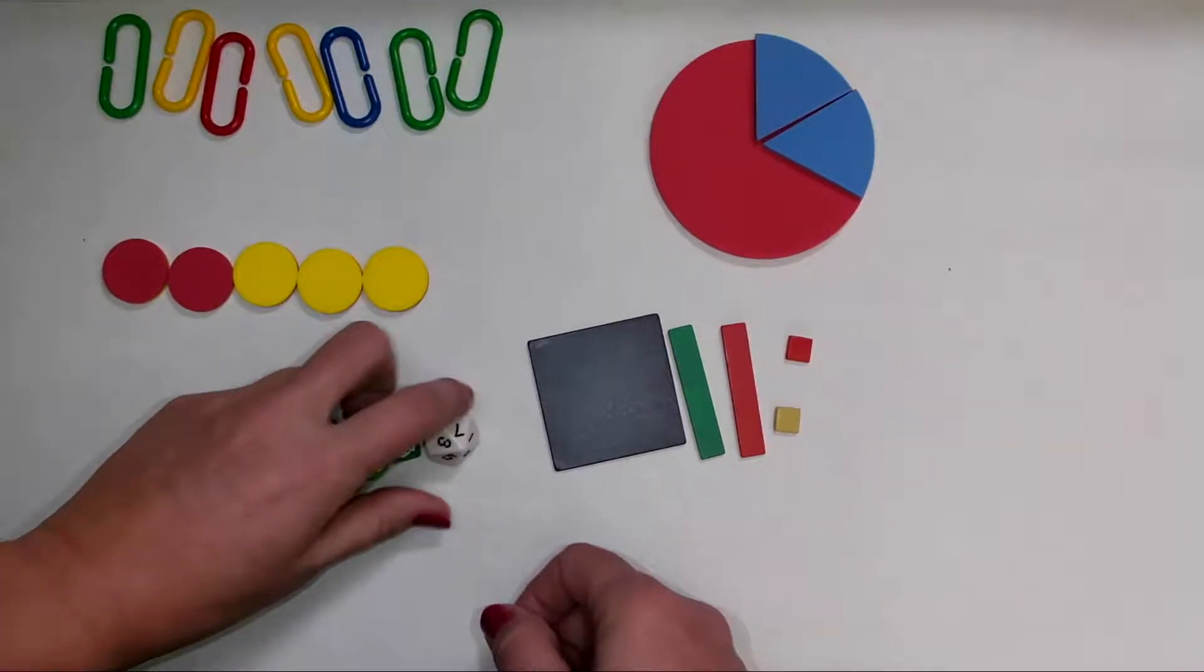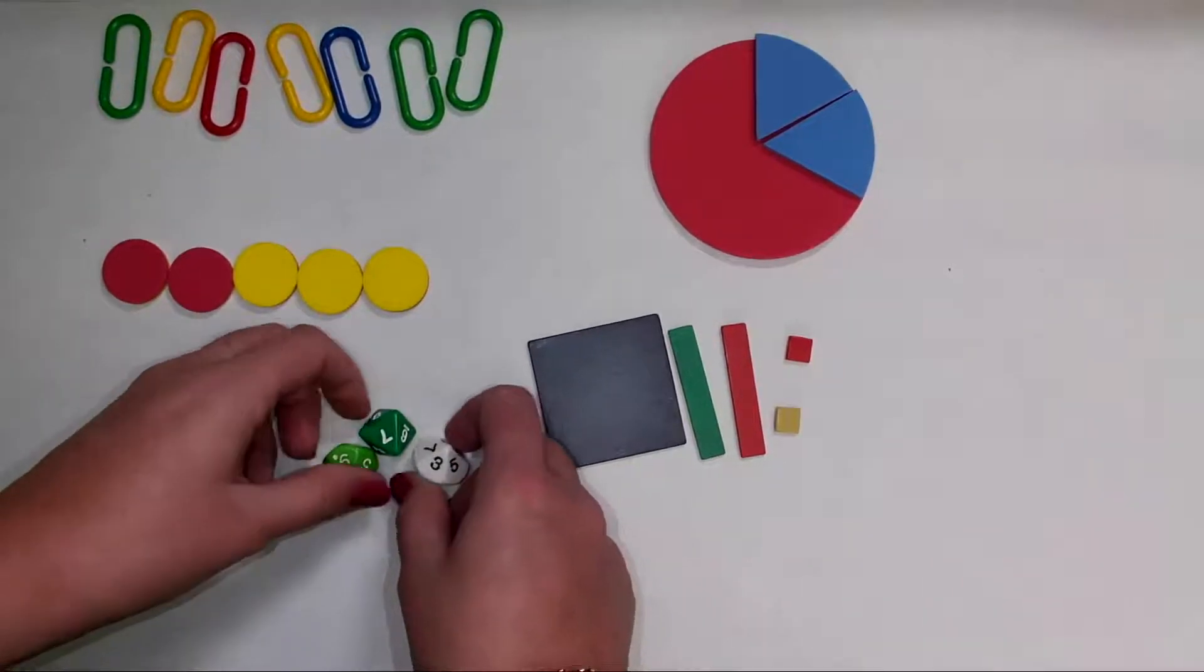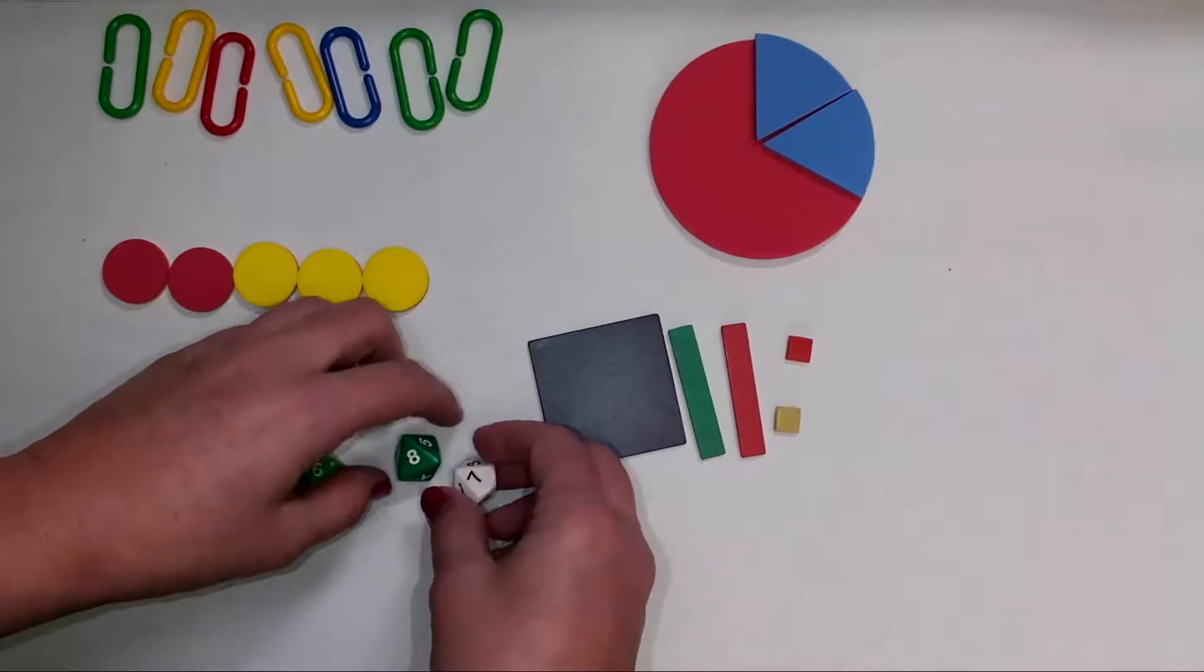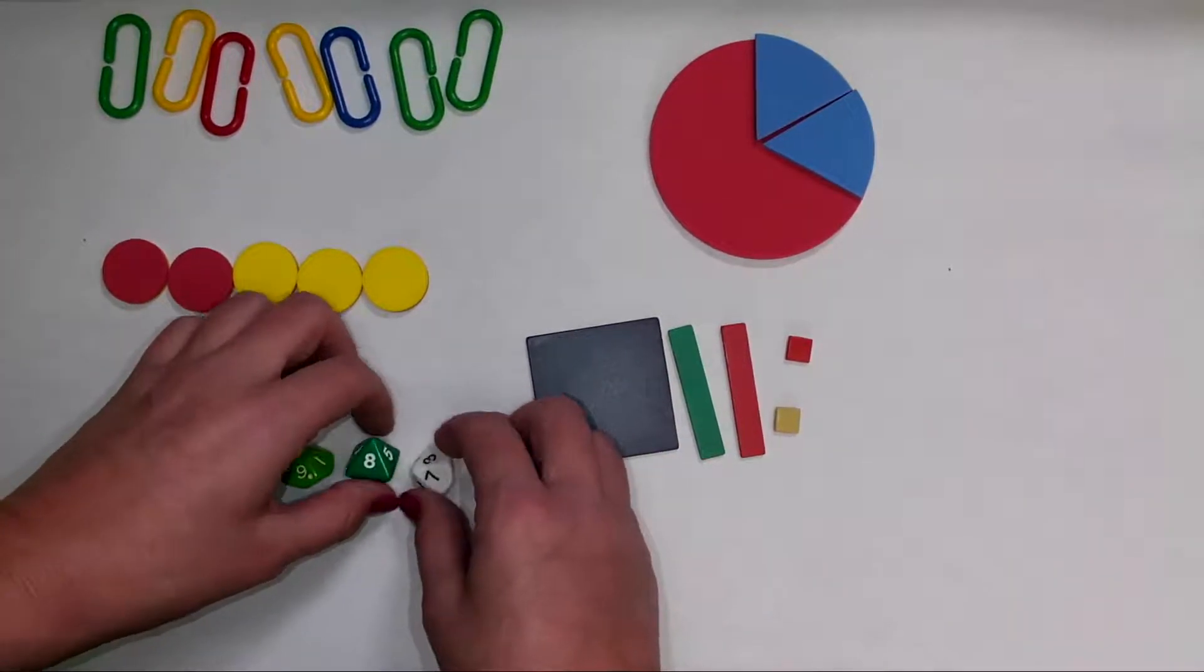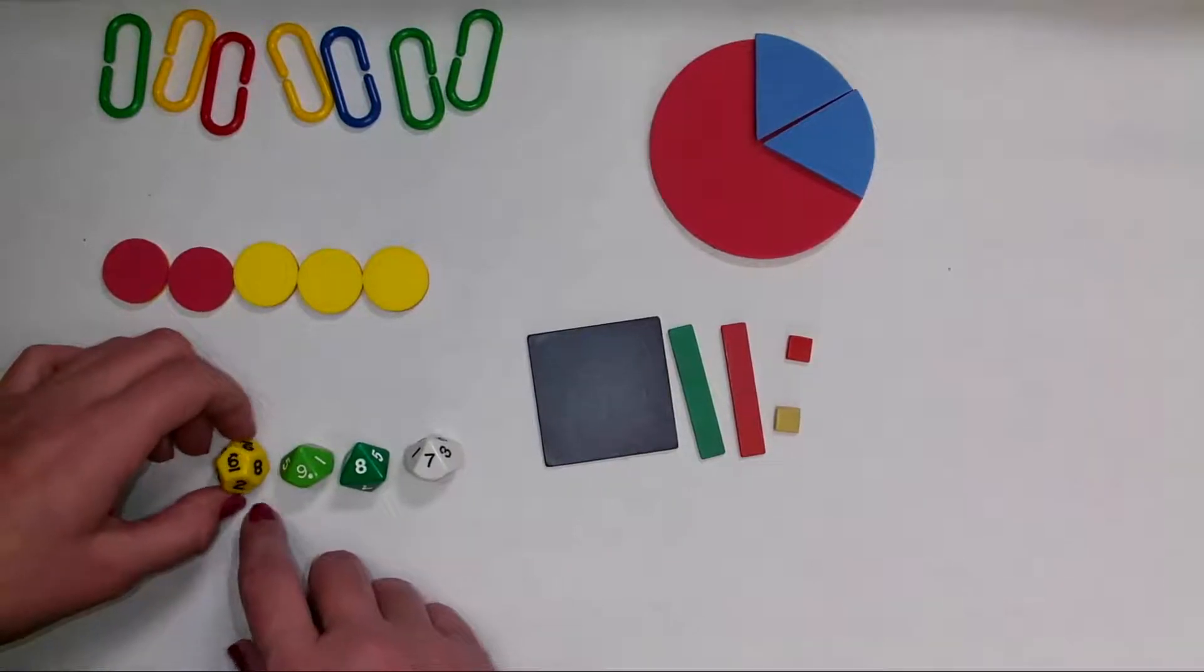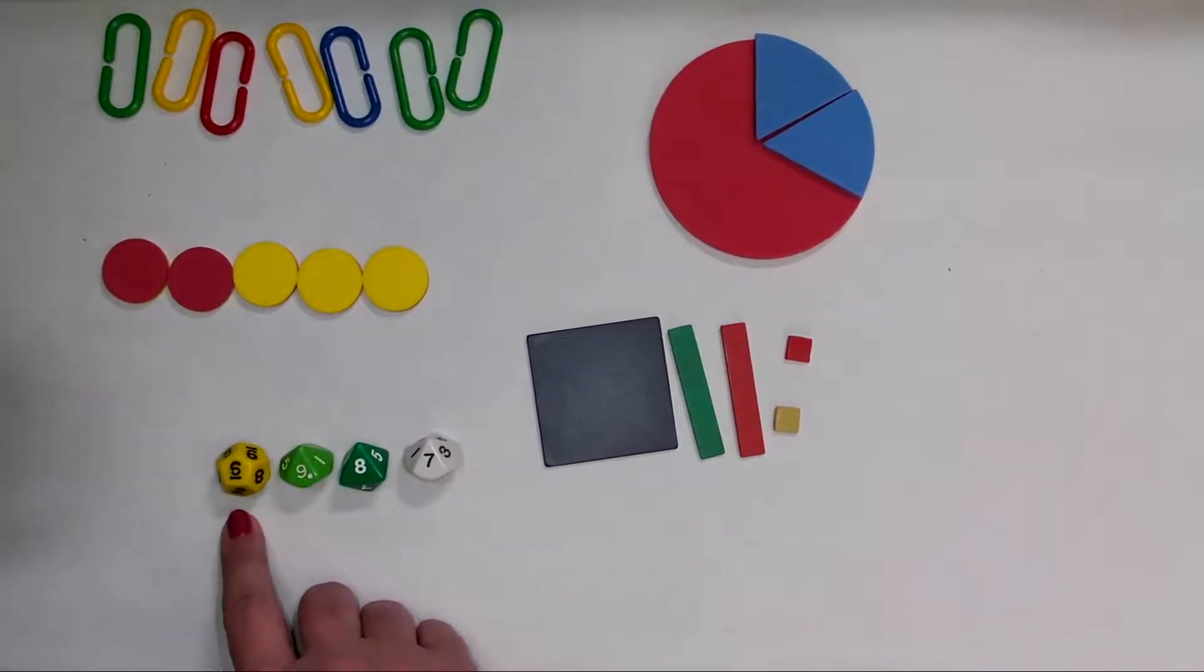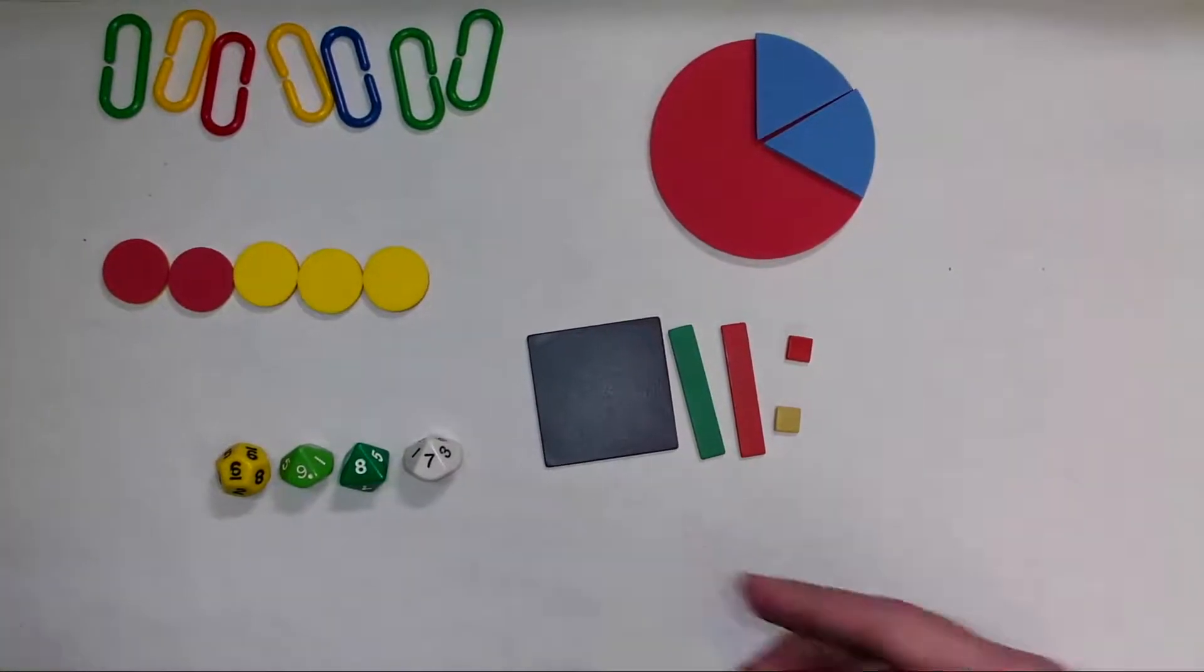And yet another manipulative might be dice. You might have these in your classroom. Maybe you roll two of these and multiply the numbers together. I could also do some stuff with place value by lining them up and saying, okay, here's the number 6,987. Lots of different things you can do with manipulatives.